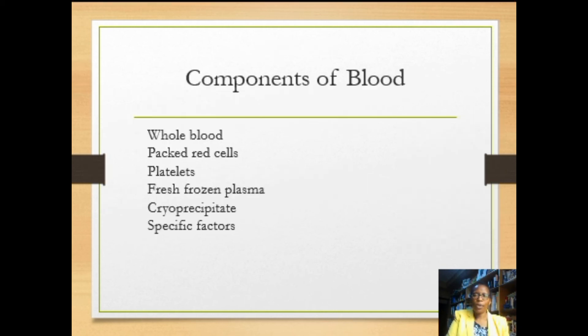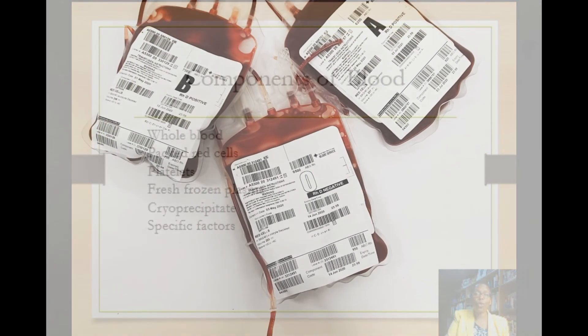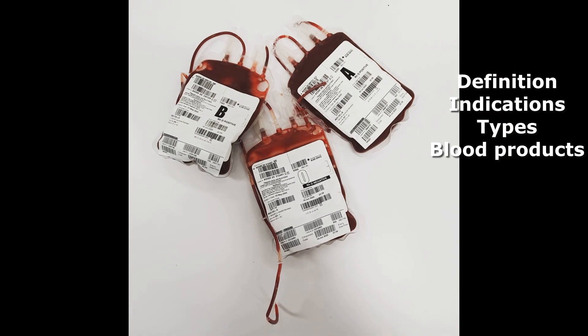The commonly used blood and blood products are: whole blood, packed cells which can be red blood cells, white blood cells, or platelets, fresh frozen plasma, cryoprecipitate, and specific clotting factors. In summary, we have looked at the definition of blood transfusion, the indications, the types of transfusion, and some of the blood products.